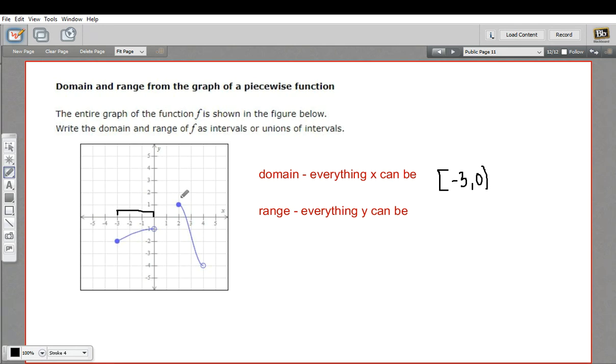But then there's another set of x values here from 2 to 4. And it includes 2, but it does not include 4. So we're going to put a union symbol in here, and we're going to go from 2 to 4. And the rounded bracket here because it doesn't include 4. So that's what this function does on the x.